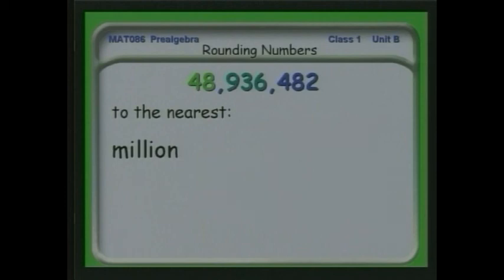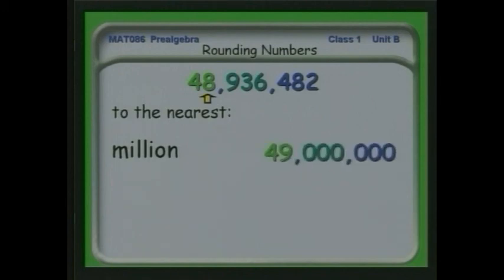Let's go to the nearest million. We put a marker on the millions place and look to the right. We see that 936,482 is greater than halfway, so we round up. Since the number to the right is greater than 5, we increase that 8 to a 9 and fill in behind it with zeros. So to the nearest million, we have 49 million.